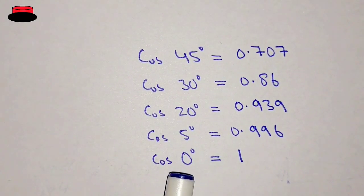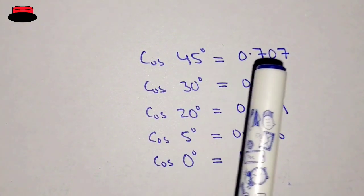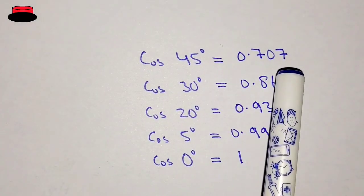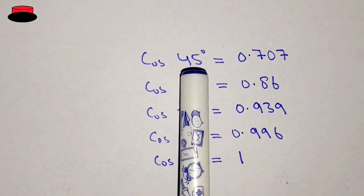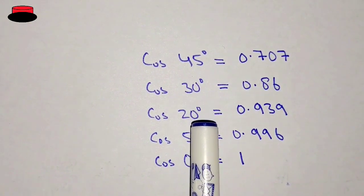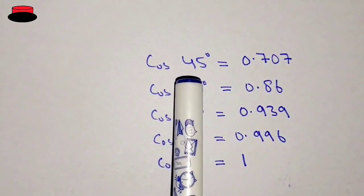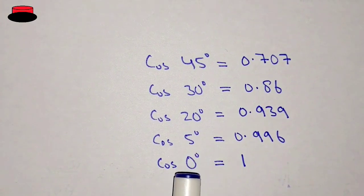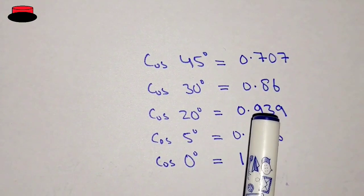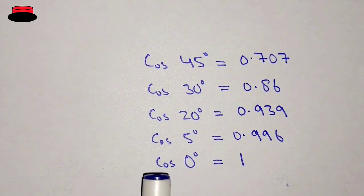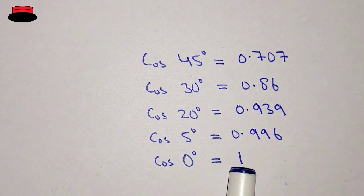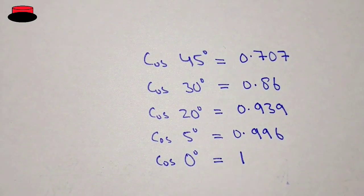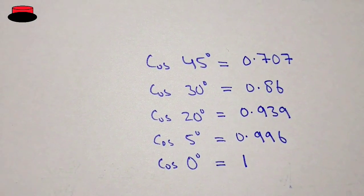Let's put the values of cosine at 45°, 30°, 20°, 25°, and 0° into a calculator. You will observe that cosine 45 degrees equals 0.707. As the degree decreases, the cosine value increases, and when the degree reaches 0, the value increases up to exactly 1. So that's why cosine 0 degrees is equal to 1. I hope you understand, thank you for watching.